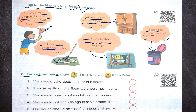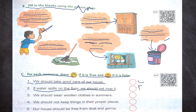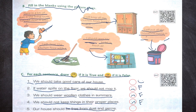True or false: Number 1 — we should take good care of our house: TRUE. Number 2 — if water spills on the floor we should not mop it: FALSE. Number 3 — we should wear woolen clothes in summer: FALSE. Number 4 — we should not keep things in their proper places: FALSE. Number 5 — our house should be free from dust and germs: TRUE.